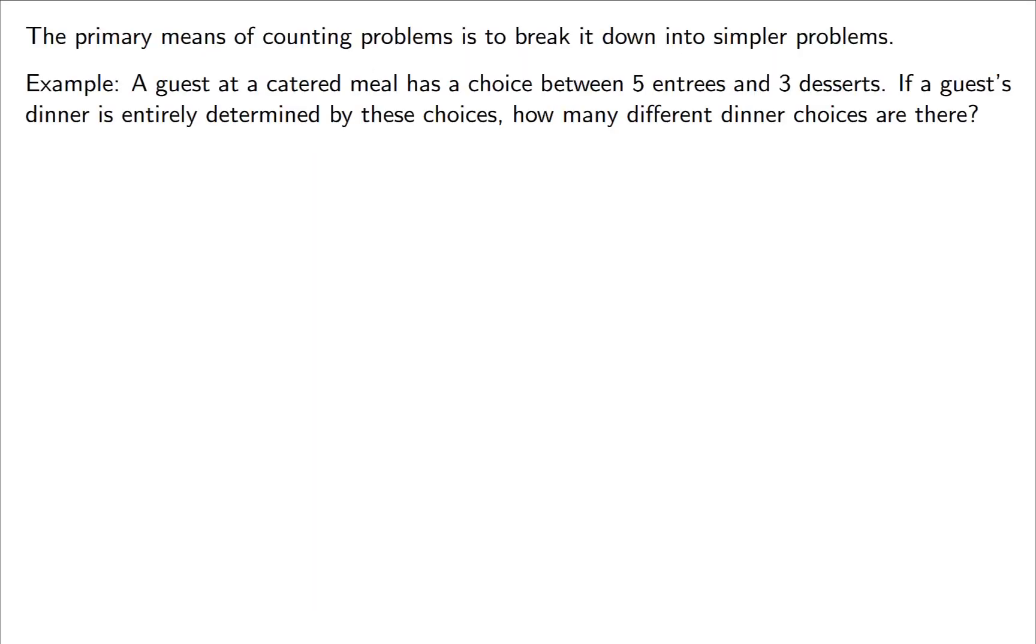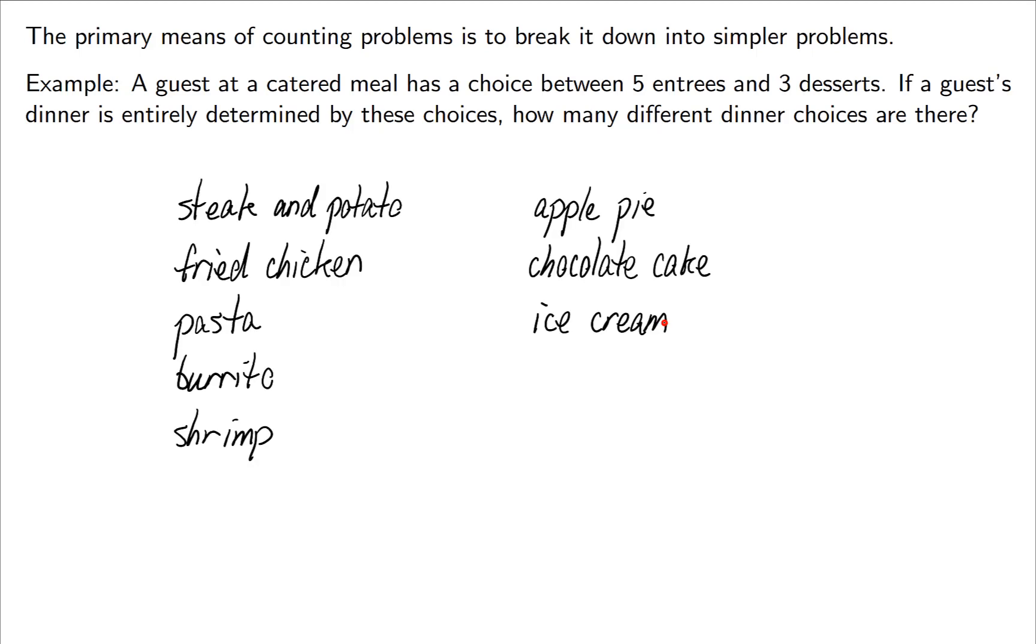Now let's do a simple example to talk about why it makes sense to use multiplication. A guest at a catered meal has a choice between five entrees and three desserts. And we're going to say that their dinner is entirely determined by what choice of entree and what choice of dessert they get. Let's find out how many choices we come up with. I'm going to write down five random entrees and three random desserts.